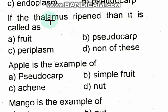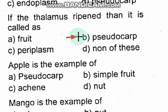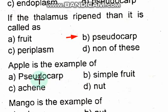If the thalamus ripens, then it is called a pseudocarp — this is a very important MCQ. Apple is an example of pseudocarp, meaning that in apple the thalamus is ripened.